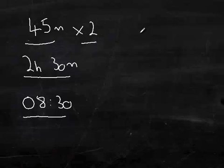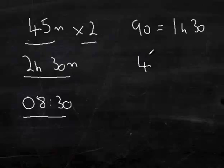So 45 times 2, because it's a return journey, is 90 minutes, which is an hour and a half. We know that they spent 2 and a half hours at the sports centre, so add those two together gives you 4 hours duration. So add that 4 hours to the starting time of 08:30 in the morning, gives you 12:30.